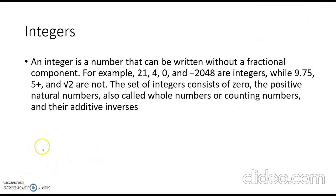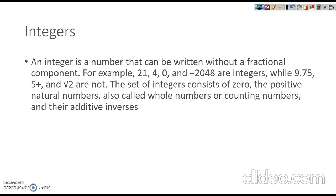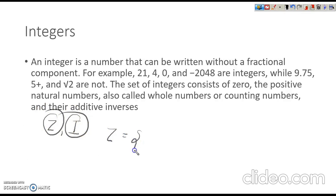Let's look at integers. All natural numbers, 0, and the negatives — all counting numbers form the set of integers. The set of these numbers is denoted by Z or I. We can say Z equals from negative infinity continuing through positive numbers and so on.